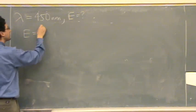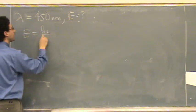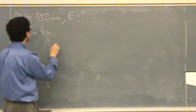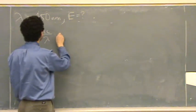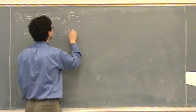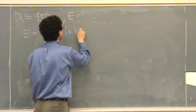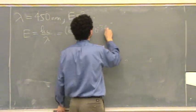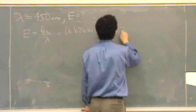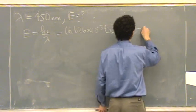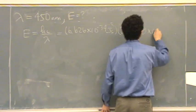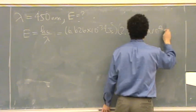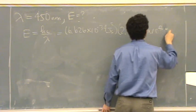You want to use E equals hc over lambda. Energy is H — this number is given on your exam — times 10 to the minus 34 joule seconds. C is 2.9979 times 10 to the plus 8 meters per second.